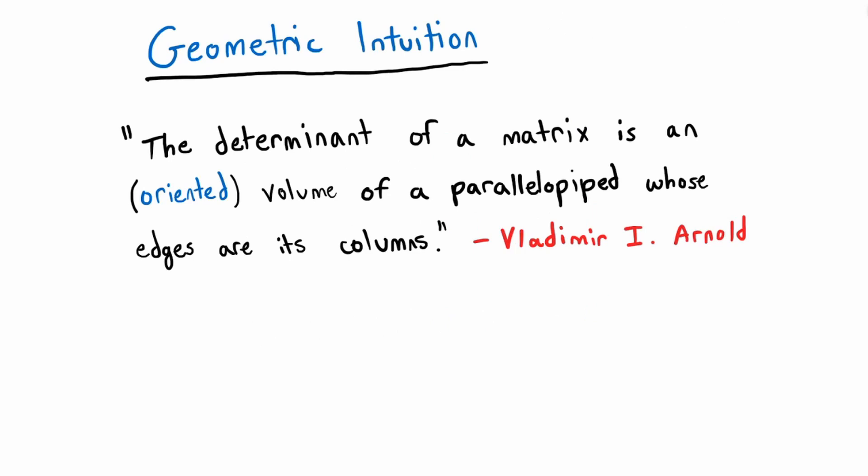Let's move on to the geometric intuition of determinants. The Soviet mathematician Vladimir Arnold provides the following definition: the determinant of a matrix is an oriented volume of a parallelepiped whose edges are its columns. I really like this geometric intuition - I think it captures a lot of what a determinant is.